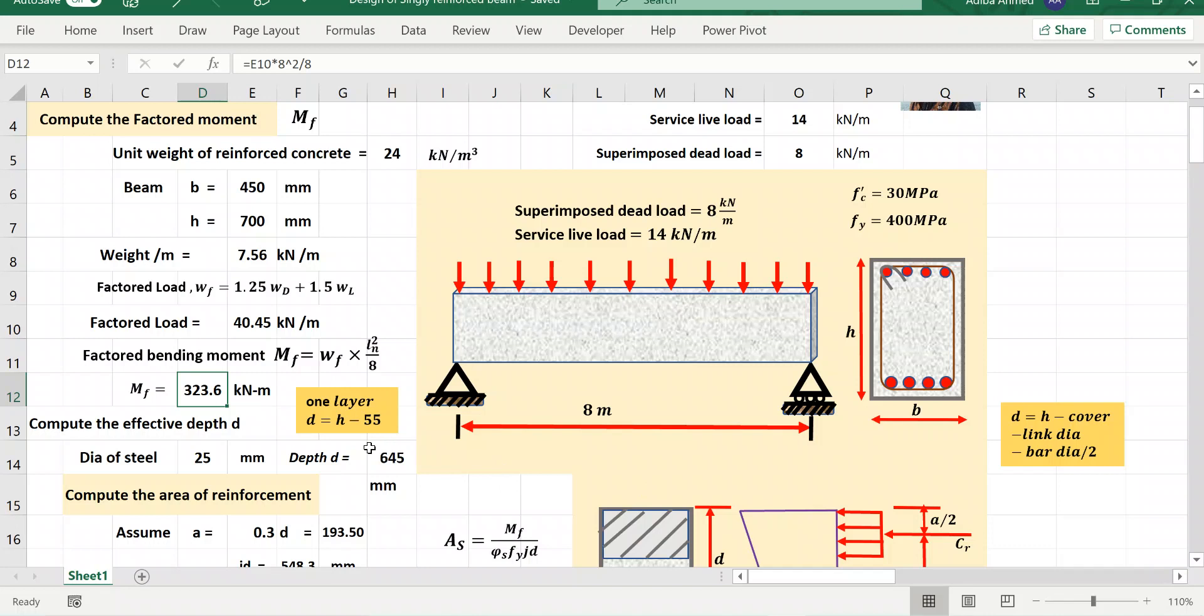So what I calculated here, d equal to h minus 55. I am using this 55, but if you calculate you can do that like d equal to h minus cover either 30, 40 whatever you want, and link diameter, stirrups, minus bar diameter by 2. You will get very close to this. So I am considering h minus 55.